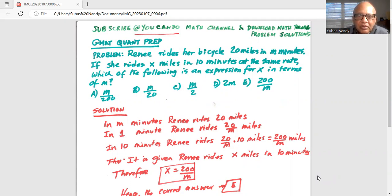So in M minutes, Renee rides 20 miles. So in one minute, Renee rides 20 over M miles. So in 10 minutes, Renee rides 20 divided by M multiplied by 10, or 20 times 10 is 200 over M miles.